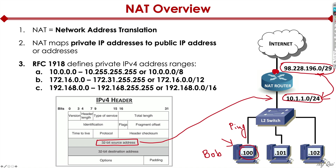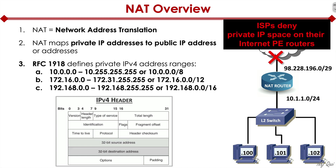You may be asking why we need NAT — can't we just route traffic everywhere on the internet? The challenge is that ISPs, or internet service providers, deny private IP address space from RFC 1918 on their internet edge routers, also called PE (provider edge) routers. They drop that traffic. ISPs by default have access control lists, or ACLs, in place to drop traffic originating from RFC 1918 private IP address space, because that traffic doesn't belong on the internet. That's the whole point of RFC 1918.